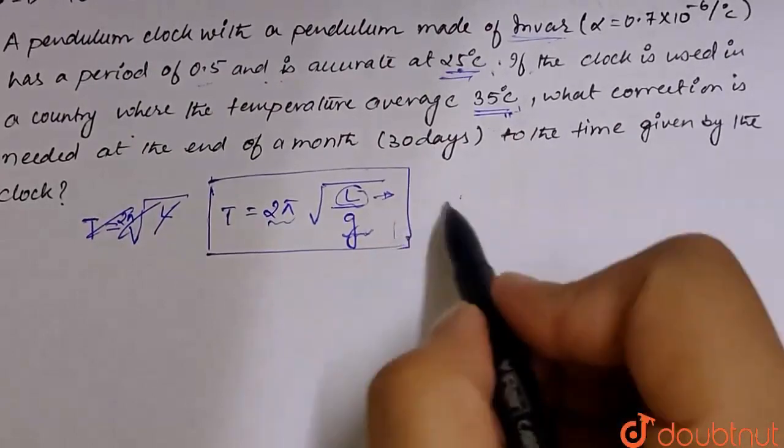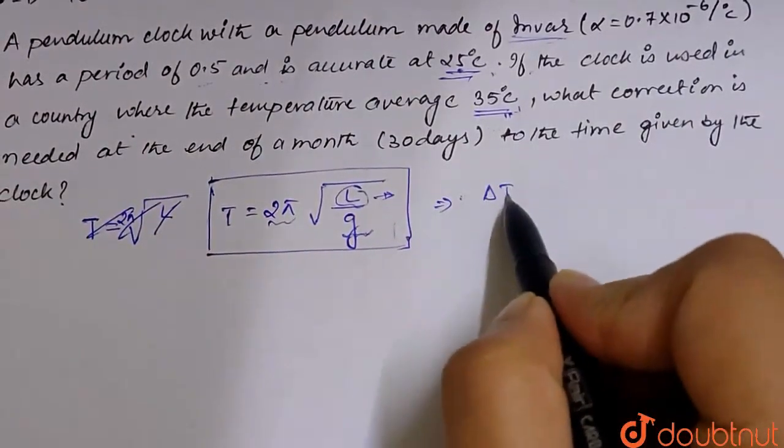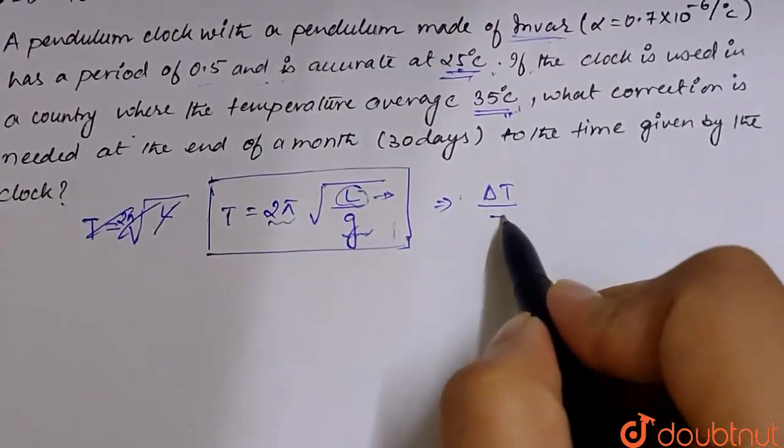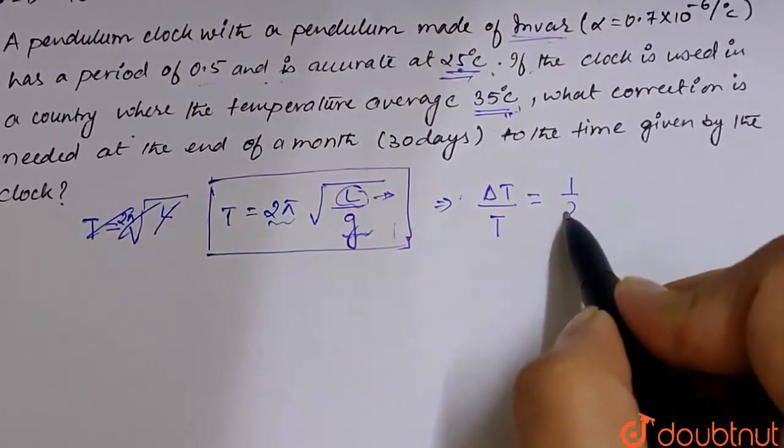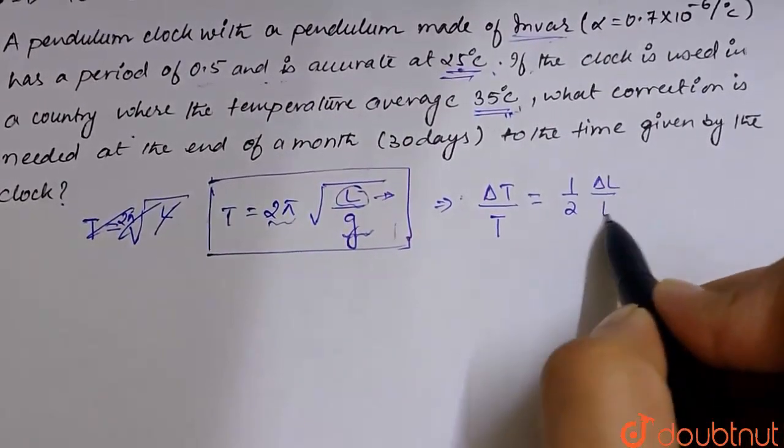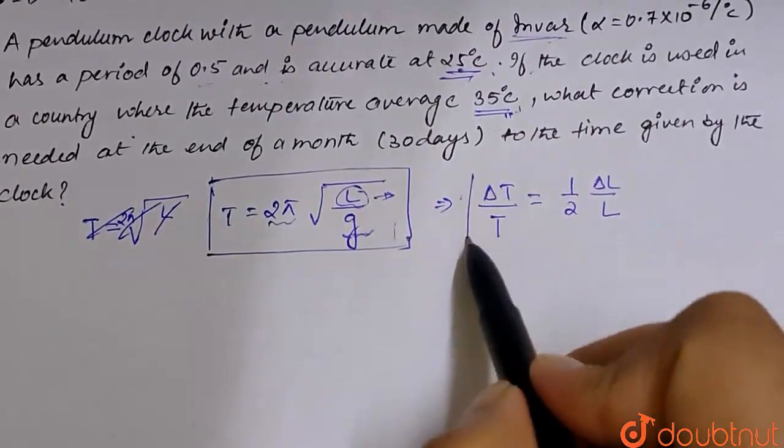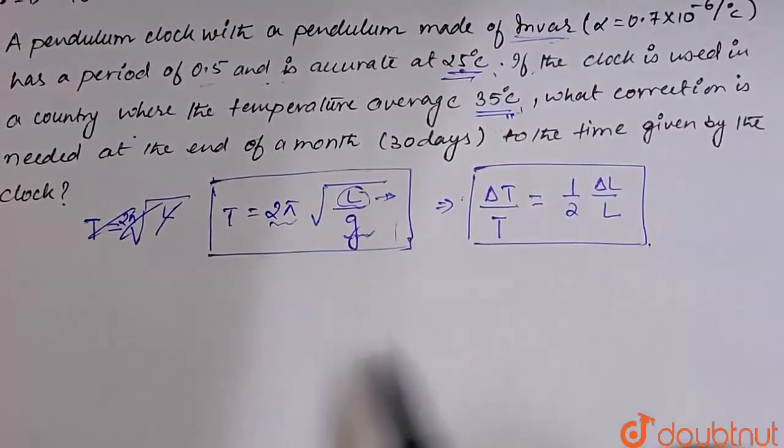So here change in time period, how much will be? 1 by 2 into delta L by L. So this much will be the change in the time period now.